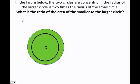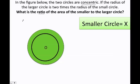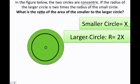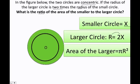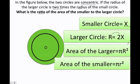First let's see what we have. We know that the smaller circle has radius equals x. Therefore, the larger circle, because it's two times the radius of the smaller one, has radius equal to 2x. Now I need the area of the larger circle, which is pi times r squared, and the area of the smaller circle, which is also pi times r squared.